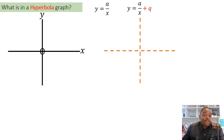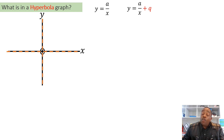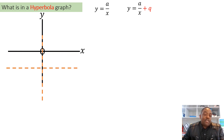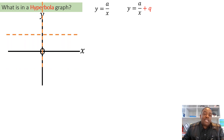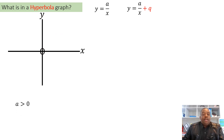In a hyperbola graph you'll find asymptotes — a vertical asymptote and a horizontal asymptote. Those asymptotes shift when the graph shifts. For grade 10 purposes, since the graph only shifts up or down vertically, you will see only the horizontal asymptote. When you look at your equation, the value of q represents the equation of the horizontal asymptote.